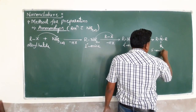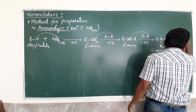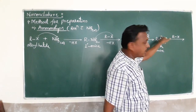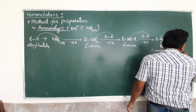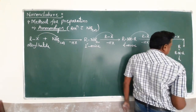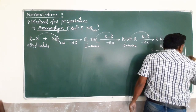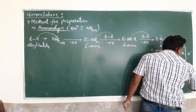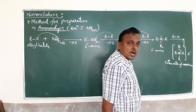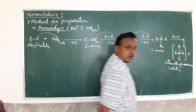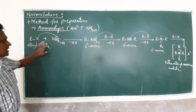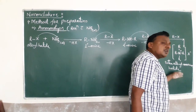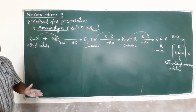The reaction continues further: the secondary amine reacts with another alkyl halide to form a tertiary amine (R3N). Nitrogen still has a lone pair of electrons, so it reacts once more with alkyl halide to form a quaternary ammonium salt [R4N]+ X−. This tetraalkyl ammonium halide is the final product of continued ammonolysis.